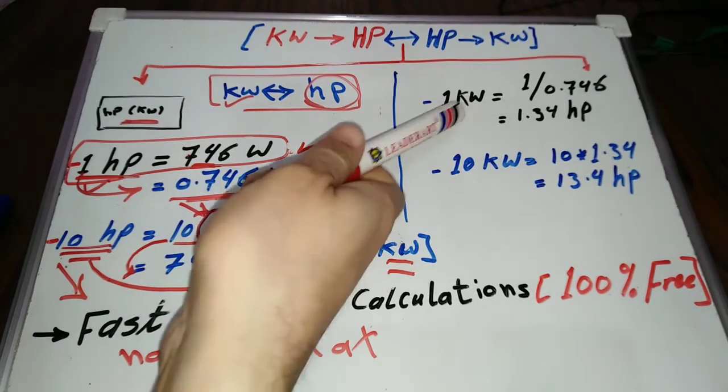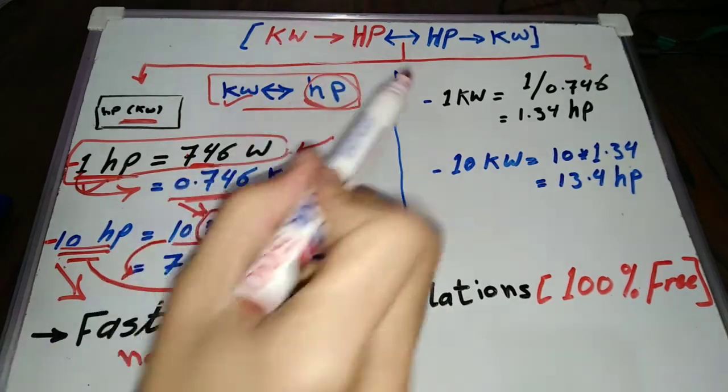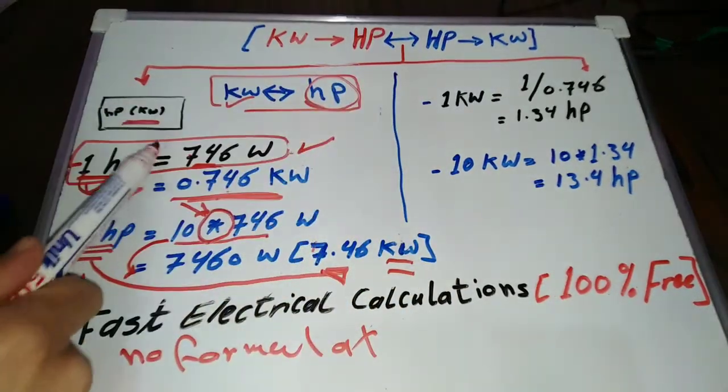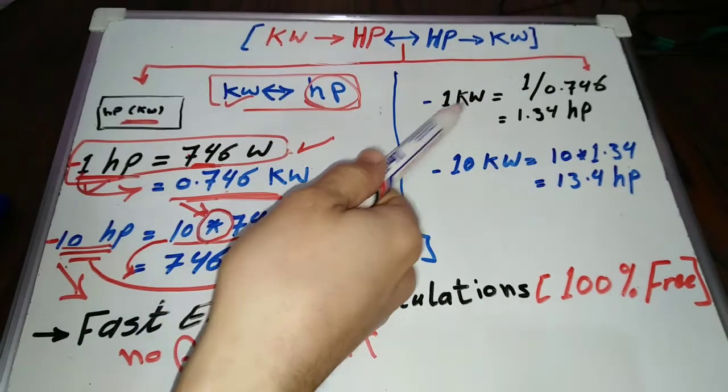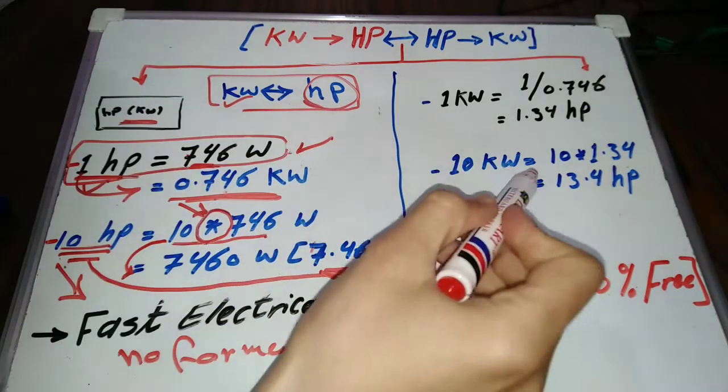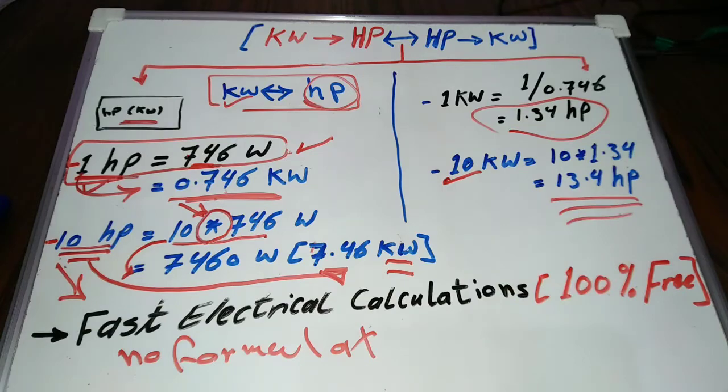Now, let's convert kilowatt to horsepower. I think you can tell the formula from the previous example. Yes, you are right. It's the opposite of the previous formula: 1 kilowatt equals 1.34 horsepower. 10 kilowatt equals 10 times 1.34 equals 13.4 horsepower.